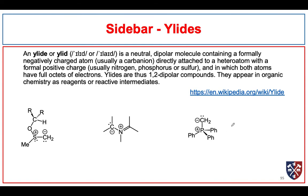Another source of nucleophilic carbon are ylids. Here we see three representatives of ylids. Ylids are neutral molecules, but they're dipolar. They contain a formal negative charge on the carbon and a formal positive charge on some heteroatom which is actually attached to that carbon. Typically we see sulfur, nitrogen, and phosphorus ylids.